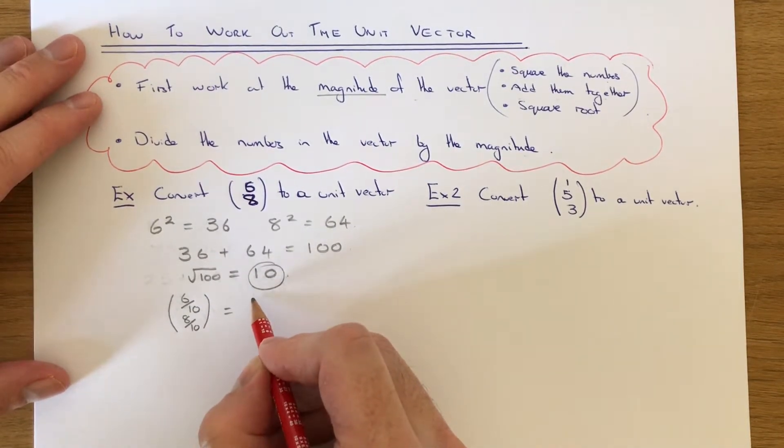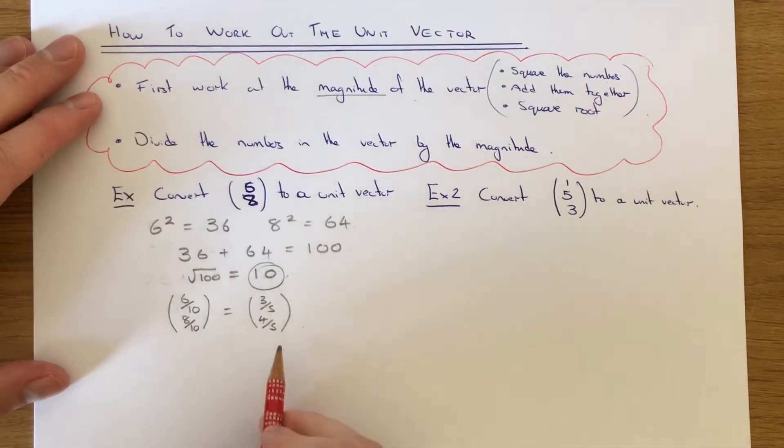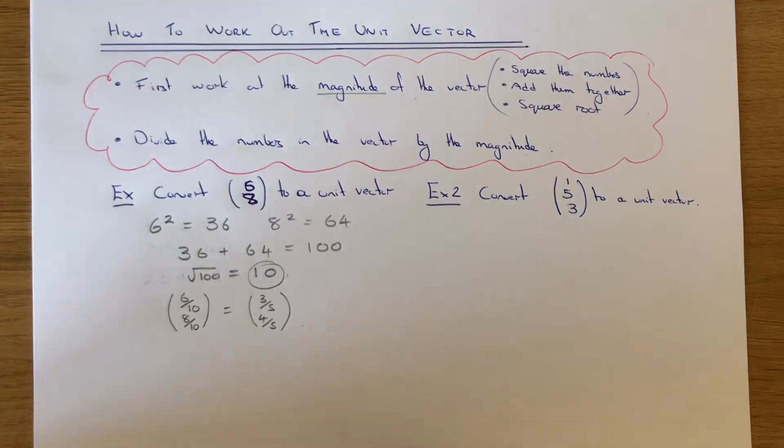And we can simplify this to 3 fifths and 4 fifths. So this will now have a length or magnitude of 1, this vector now.